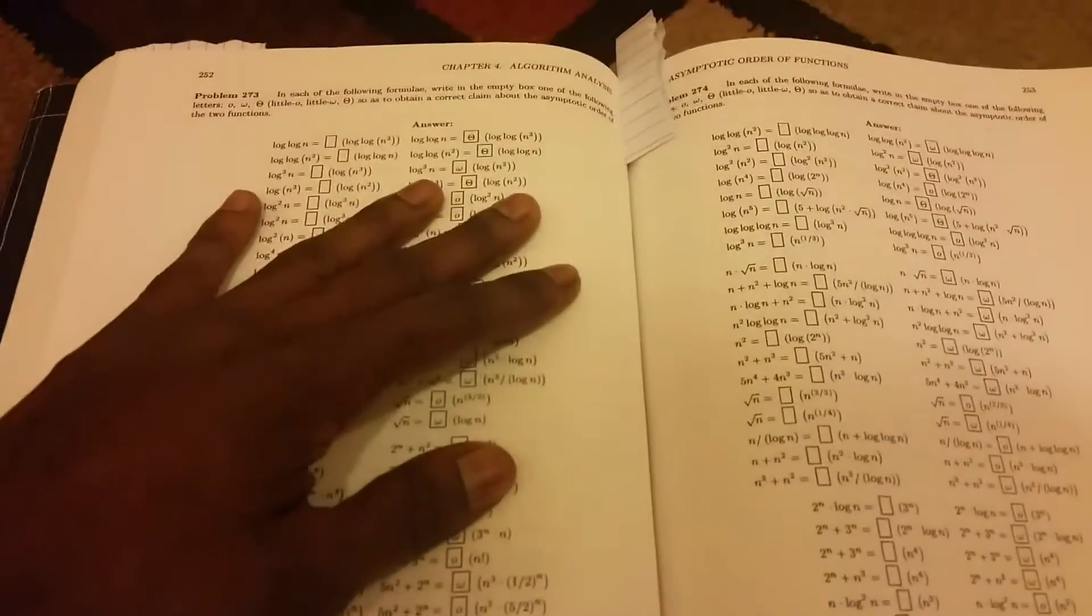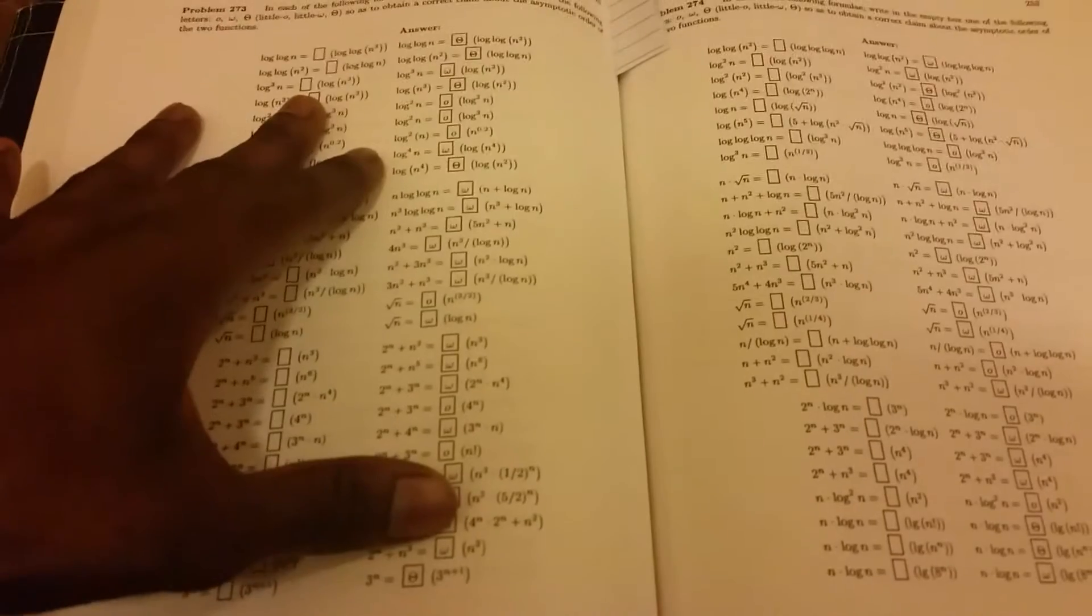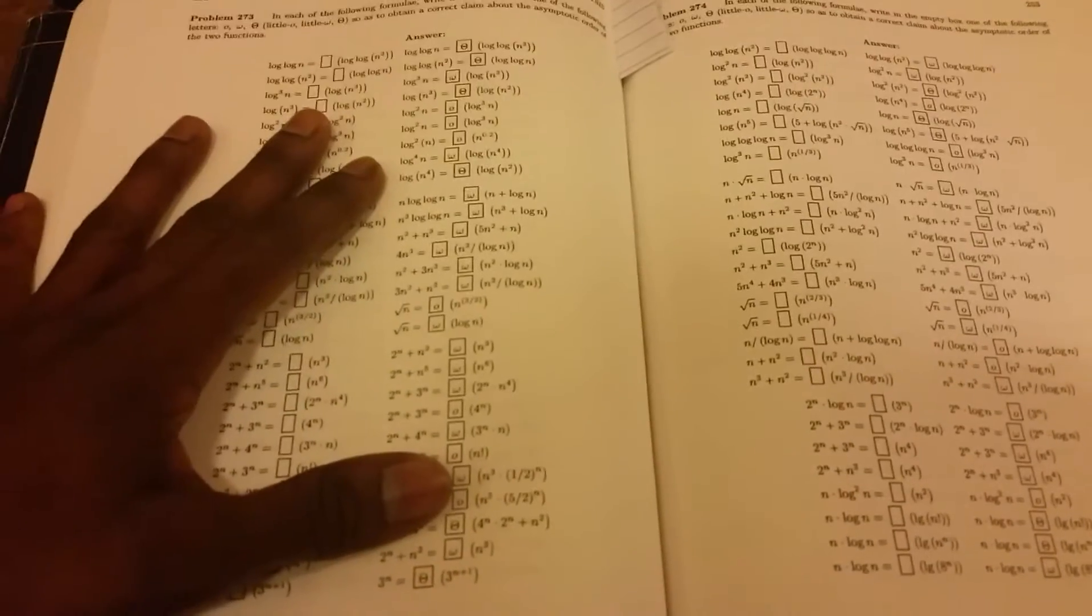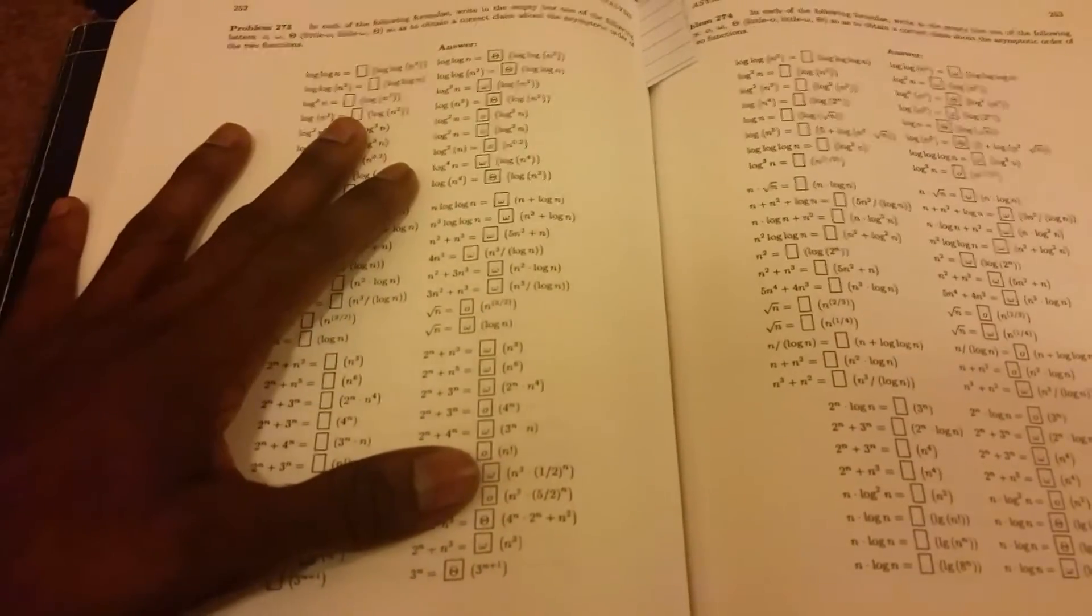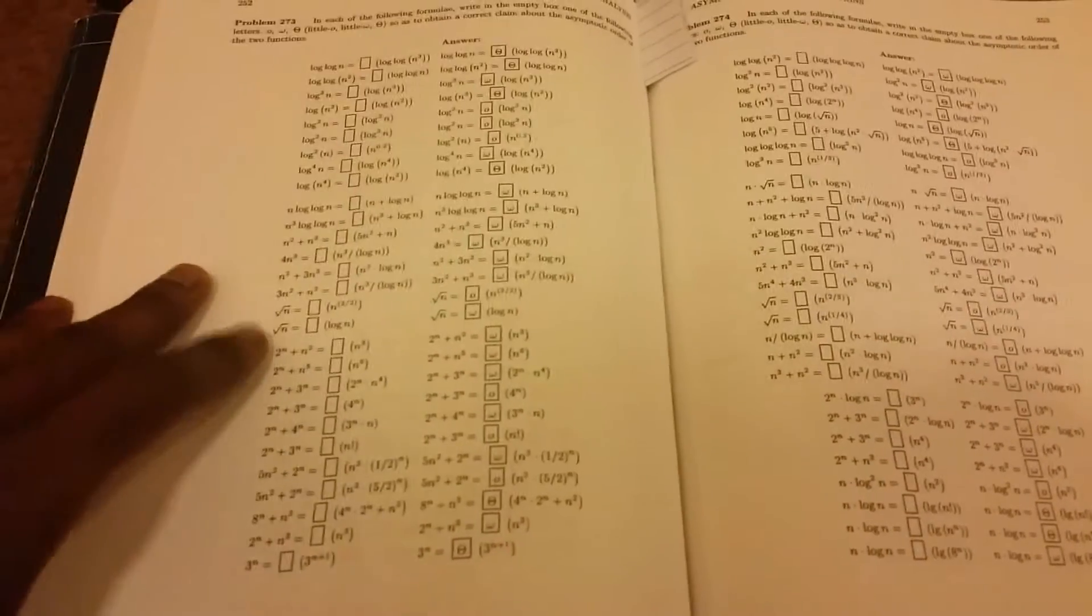This is a page on algorithm analysis and asymptotic order of functions. So things like big O, little o, big omega, little omega, and theta. And it has all these practice problems to help you understand what it means for a function to be big O or big theta or any of those asymptotic functions.